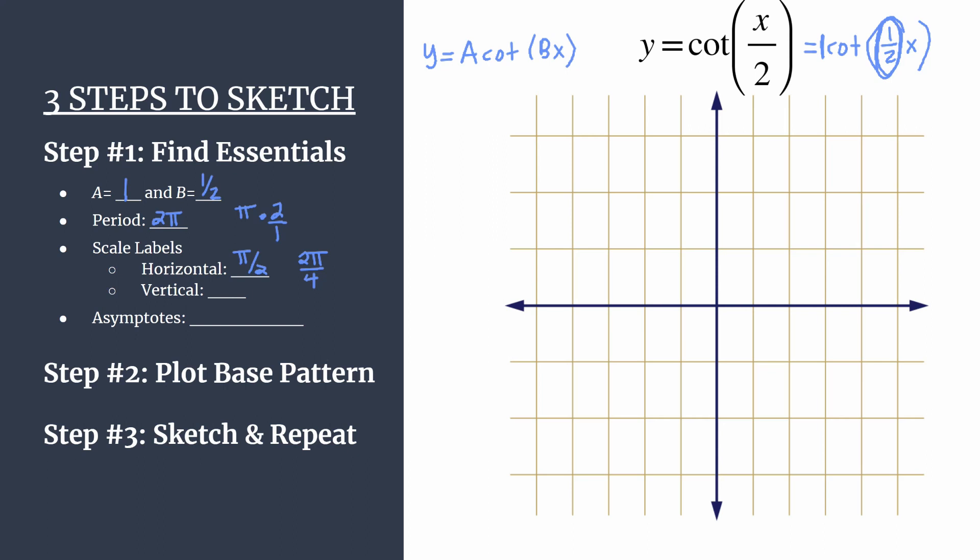Label your horizontal tick marks every pi over 2. And then for your vertical axis, usually counting by ones will work really well. Let's go ahead and label our grid now.